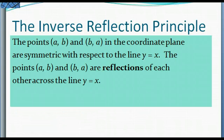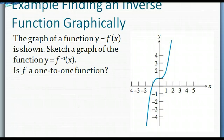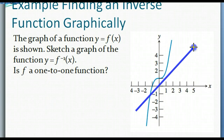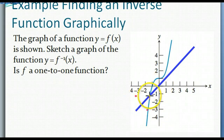The inverse reflection principle: if we have points (a, b) and (b, a), they are symmetric with respect to the line y = x, the identity function — they are reflections of each other. We can use that to find the inverse of a function. Given the graph of a function f(x), to sketch the inverse, we first plot the identity function line, then plot every point of the function as a reflection across that line.